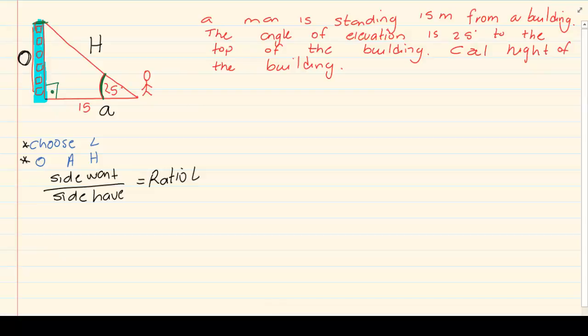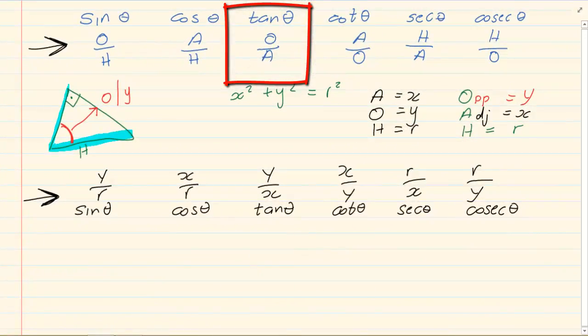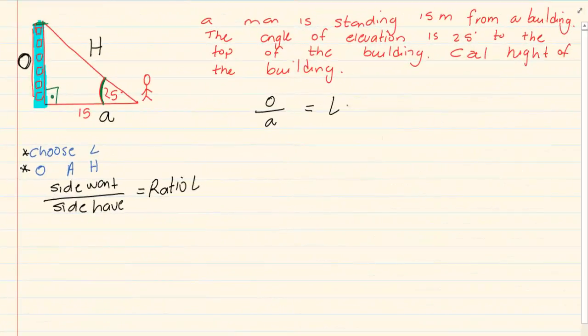So we have side you want which is O. The side I want is my O over the side I have which is my A. Now O over A, O over A is tan. So I'm going to make it equal to tan. And which angle did I choose? I chose 25 degrees.